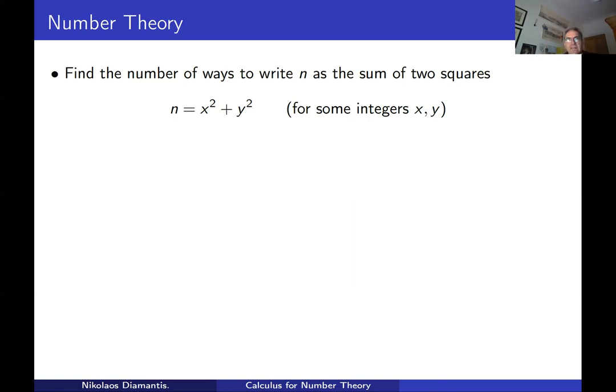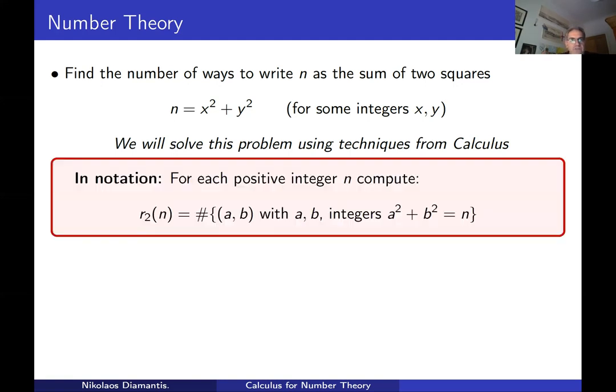And the question is, are there different ways of doing this same job? That's the question. So we would like to ideally find a formula which tells us that if you are given a number n, any number, no matter how high it is, you can even program it ideally in a computer so that you can compute the number of ways by which you can write it as the sum of two squares. As I said, we will solve the problem using techniques from calculus. That will be, let's say, our motivation for what follows from now on.